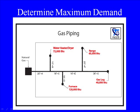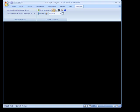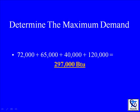To determine the maximum demand, simply add up the individual appliance's BTU input. On a contractor's exam, if you're missing a value, simply go to table 4.2.2 on page 26. For example, a single family hydronic boiler has a BTU input rating of 100,000. The maximum demand for this gas piping lesson is 297,000 BTU.